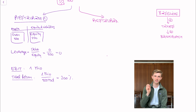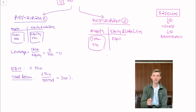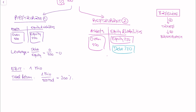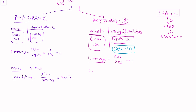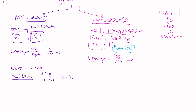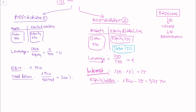Restaurant two also needs the 500,000 pizza oven but is financed with 50% equity and 50% debt, so the leverage ratio is 250,000 divided by 250,000, which is 1. Restaurant two also has an EBIT of 1 million euros, but now we have an interest payment. The debt outstanding is 250,000 times a 10% interest rate, so interest is 25,000 going to the debt holders. That leaves 975,000 for equity holders. The total return is 975,000 plus 25,000 divided by 500,000, which also equals 200%.